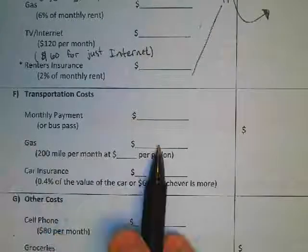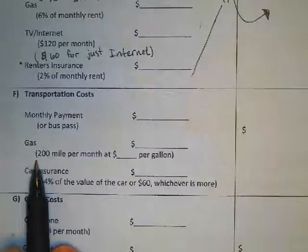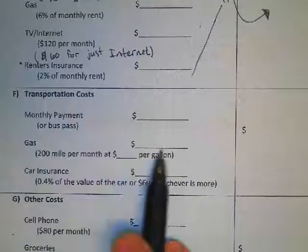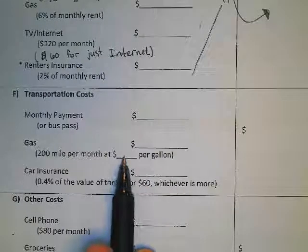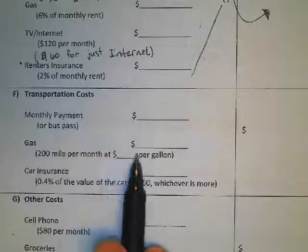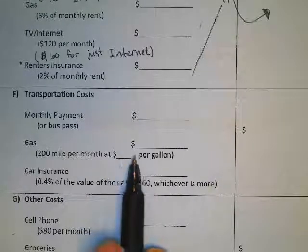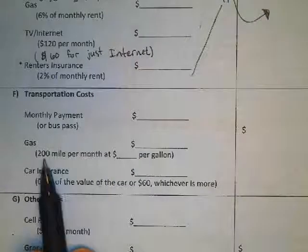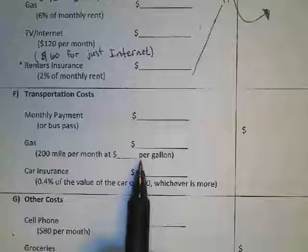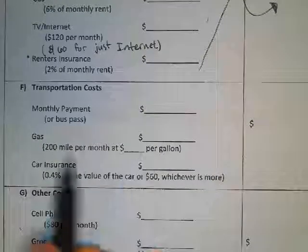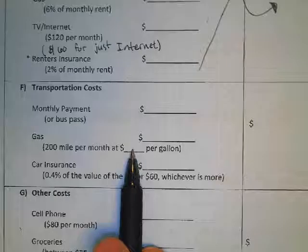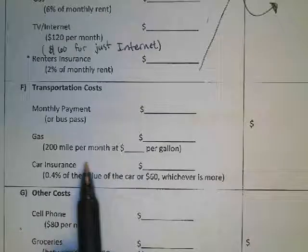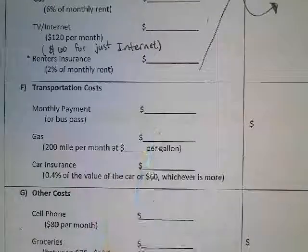To figure out your gas, we use the fact that we drive about 200 miles per month and look at how much gas costs. You'll need to look up the average price of gas in our town right now. Every car uses a different amount of gas, so you'll use your miles per gallon and the current gas price to figure out how much you're spending on gas each month.